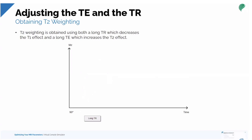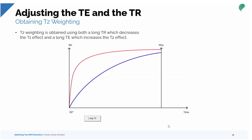For T2 weighting, we use a long TR — which decreases the T1 effect — and a long TE, which increases the T2 effect. With a long TR and a long TE selected way out on the timeline, there's a big differentiation between the two tissues — but in reverse. The signal intensity of the blue tissue is much higher than the signal intensity of the red tissue. That is a very high T2 effect.